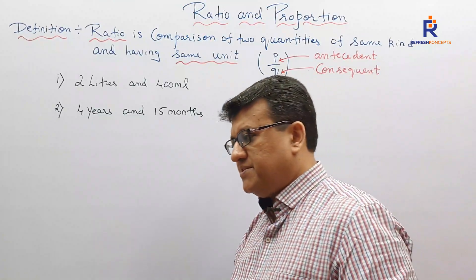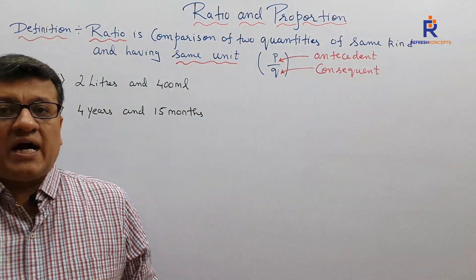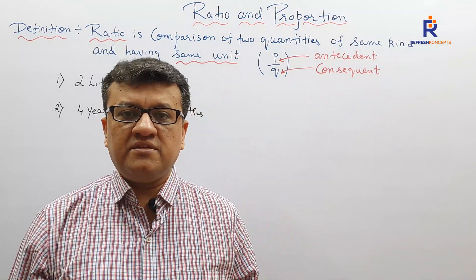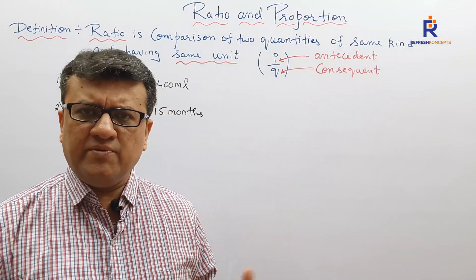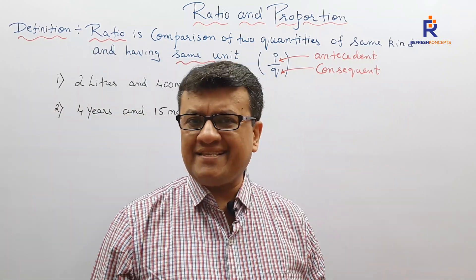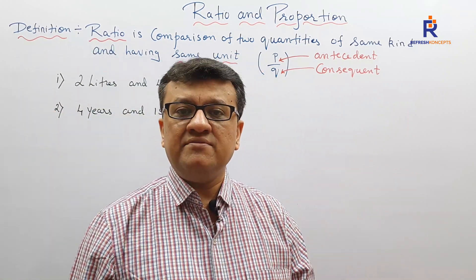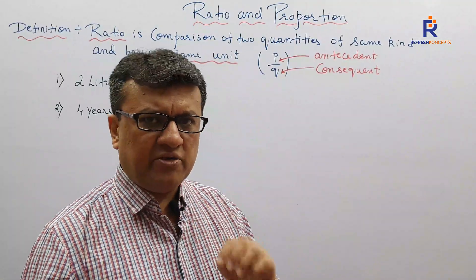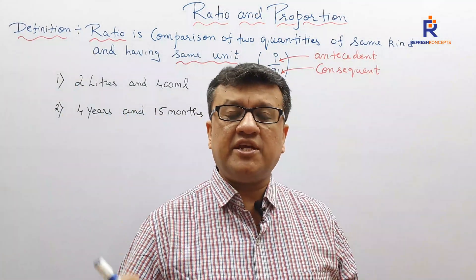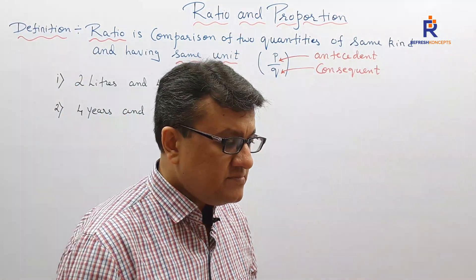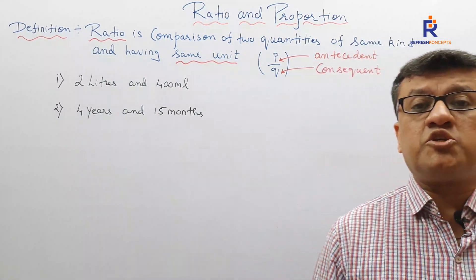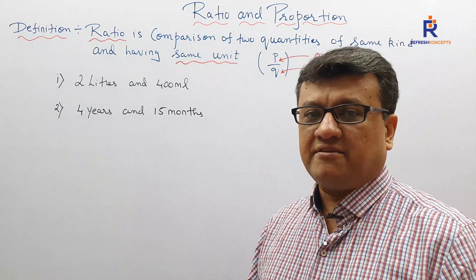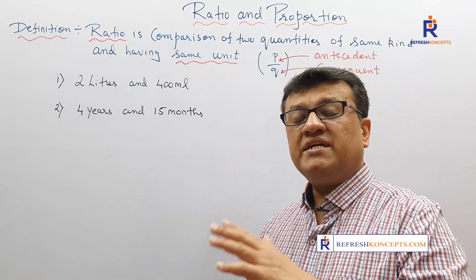Say for example, if I say what is the ratio of 100 rupees to 150 rupees, you might simply say 100 upon 150, zeros get cancelled off, we are left with 10 by 15, 5 times 2, 5 times 3, the answer is 2 by 3. I'm not writing it out, I'm just making you understand. 100 by 150, so ratio turns out to be 2 by 3. But what if I have to say what is the ratio between 100 rupees and 5 rupee 50 paise?